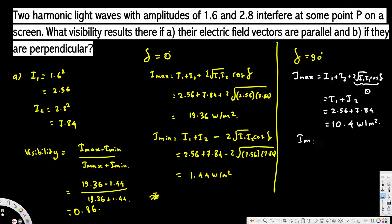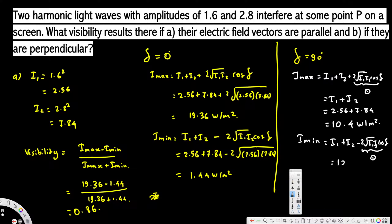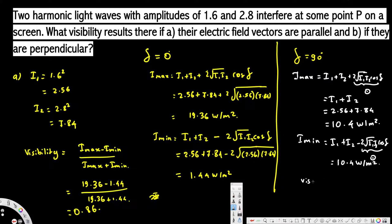For Imin: Imin = I1 + I2 − 2√(I1·I2)·cos(δ). Again cos(90°) = 0, so Imin = I1 + I2 = 10.4 W/m². Since Imax = Imin = 10.4, the numerator of the visibility formula is zero, giving visibility = 0. So when the electric field vectors are perpendicular to each other, the visibility is zero. That's how we solve this kind of problem.